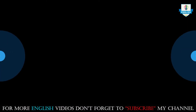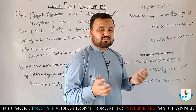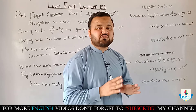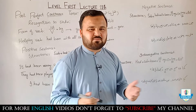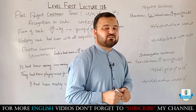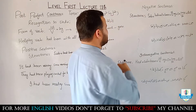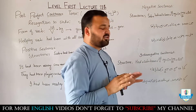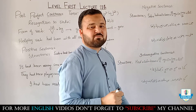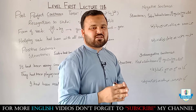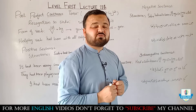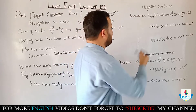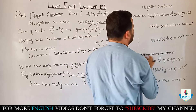Now coming towards negative sentences. Negative sentences are those in which we are not doing an action — there is no action. The structure is the same as positive, but we put 'not' between 'had' and 'been': Subject + had + not + been + first form + ing + object + since/for + rest of sentence.